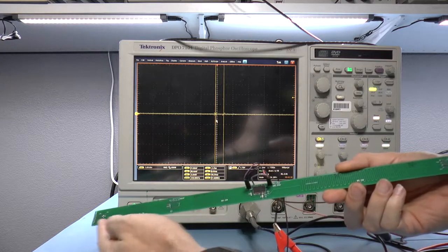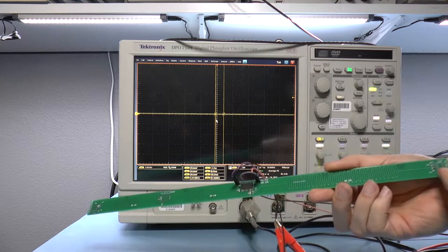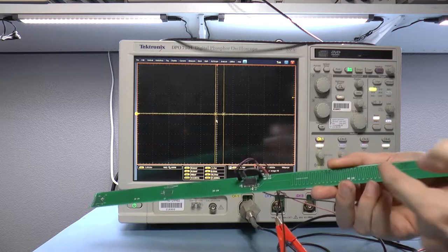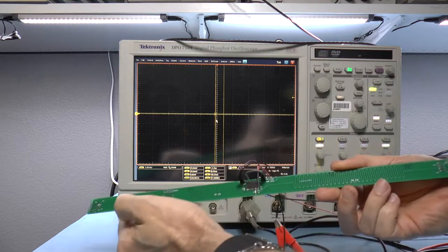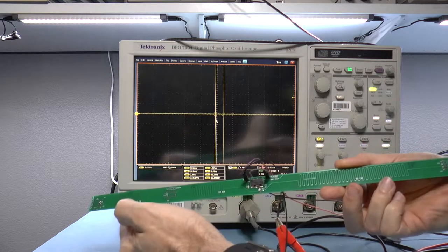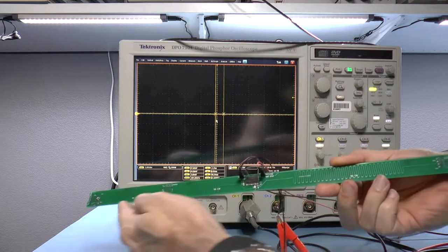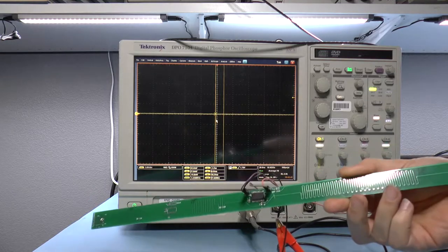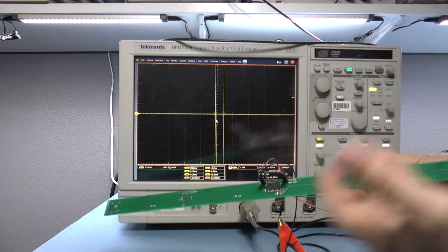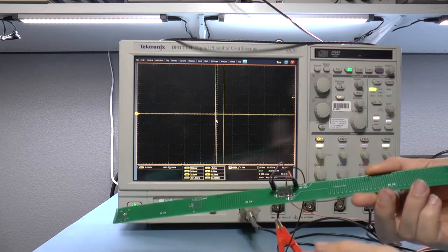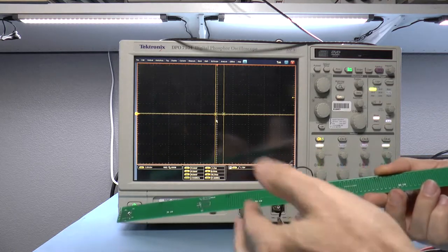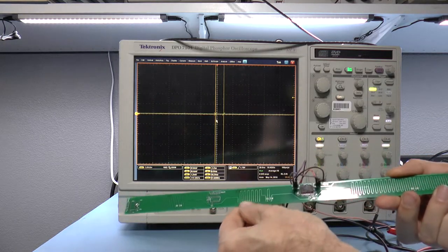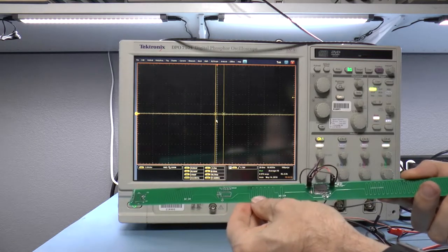You take the total length of your transmission line and you double it. So that's 90 centimeters and 60 centimeters is 150 centimeters, and you double it so that's 300 centimeters. Then you convert that to time, so 300 centimeters divided by 18 is something like 16.6 or so nanoseconds.